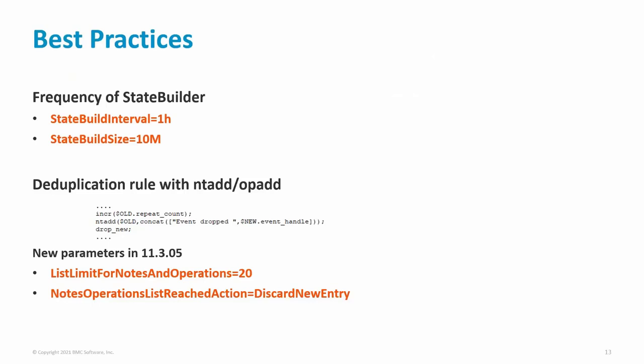Carrying on with best practices. StateBuilder creates a new MCDB file by reading the current MCDB file and applying transactions from the exact file. StateBuilder will run whichever is sooner: the exact file reaching a certain size or after a period of time. The parameters StateBuildInterval and StateBuildSize control this — StateBuildInterval has a default of 1 hour and StateBuildSize has a default of 10MB. Avoid frequent StateBuilds as they are both CPU and disk I/O intensive. A good practice is that StateBuilder does not run less than every 10 minutes. For heavily loaded cells with a high event rate, it will be necessary to increase StateBuildSize.